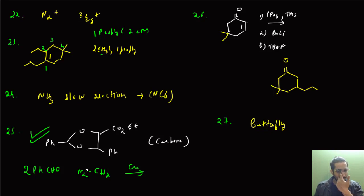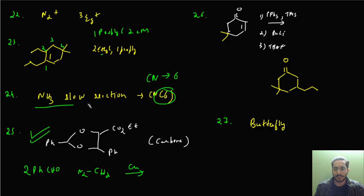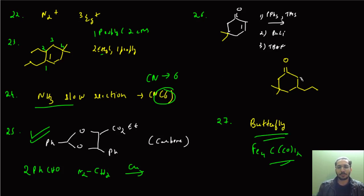There was a question where a phenanthroline complex was given with NH₃, and the mechanism proceeded by outer sphere. NH₃ will lead to a very slow reaction. The coordination number was 6 — I believe that was one of the correct answer options: coordination number 6 and NH₃ leads to a slow reaction. Then there was a complex Fe₄(CO)₁₂ — for that, the correct answer was butterfly geometry.